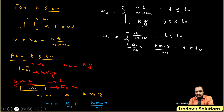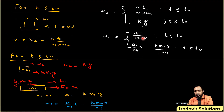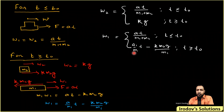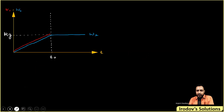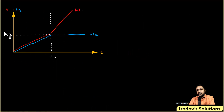For t > t₀, w1 is still a linear function of time, so it's still a straight line. However, the slope for t ≤ t₀ was a/(m1 + m2), while for t > t₀ it becomes a/m1 — the denominator is smaller, so the slope becomes steeper. The graph of w1's acceleration therefore continues with a greater slope after t₀. That is how the accelerations w1 and w2 vary with time.